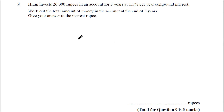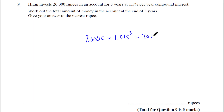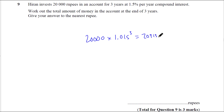Question 9 — compound interest. This is a straightforward one. So it's 20,000 times — be careful here — 1.1 would be 10% interest, so it's 1.015, that's 1.5%, to the power of 3. Do that on your calculator. It does say to the nearest rupee, so let's do the full answer first. The full answer is 20,913.56 — then we round that to the nearest rupee.